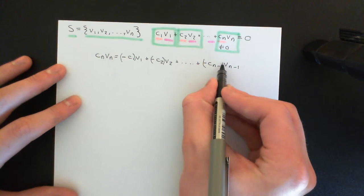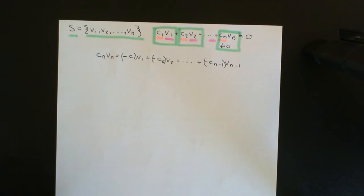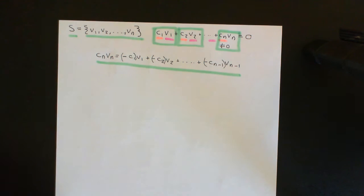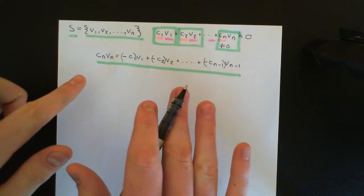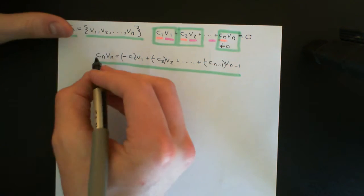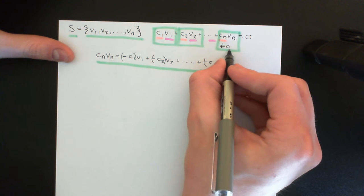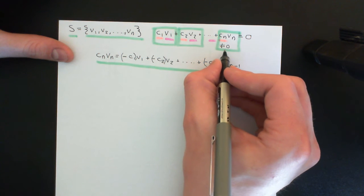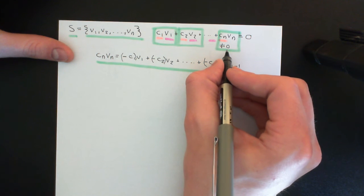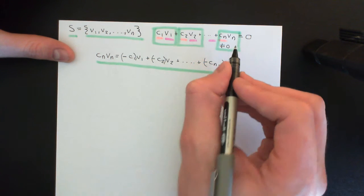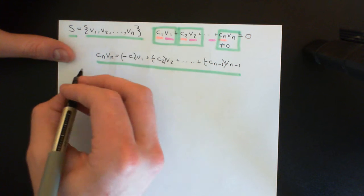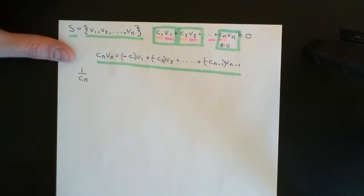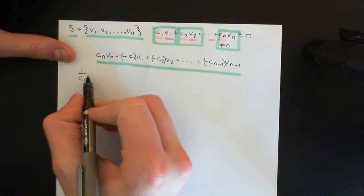All we now need to do is get rid of this Cn. What we can do is scalar multiply both sides by the multiplicative inverse of Cn. Remember, Cn by assumption was not equal to zero — it was not the additive identity within the field. All elements other than the additive identity within the field have a multiplicative inverse. So Cn will have a multiplicative inverse, which I'll notate 1/Cn. I'm now going to scalar multiply both sides of the equation by 1/Cn, which is perfectly valid: if two vectors are equal, scalar multiplying both by the same scalar preserves the equality.